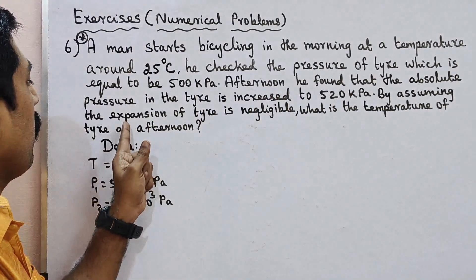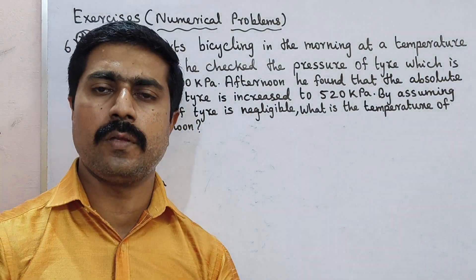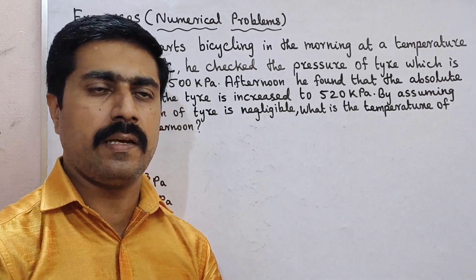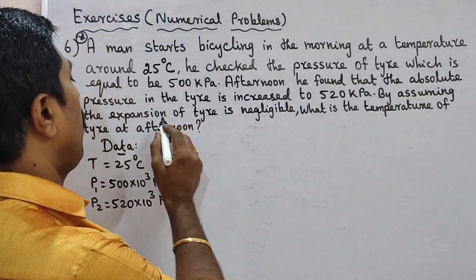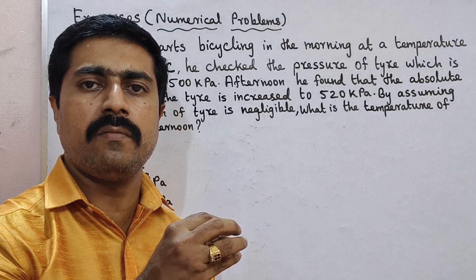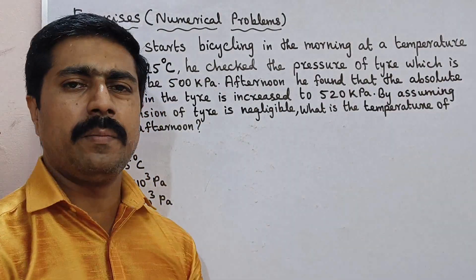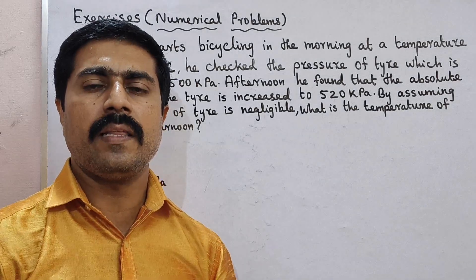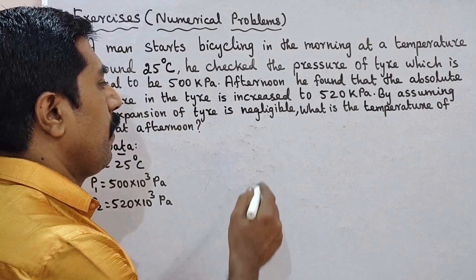By assuming the expansion of the tyre is negligible, that means the volume change is negligible — too small. So the volume of the tyre remains essentially constant.